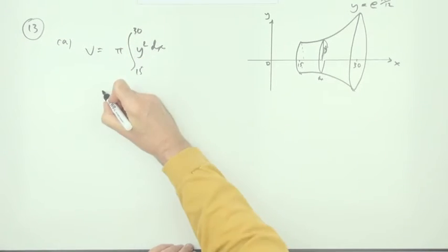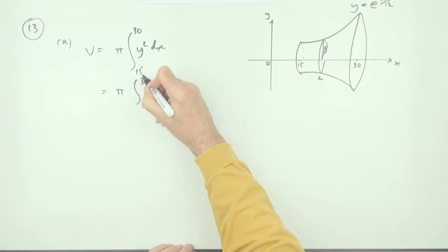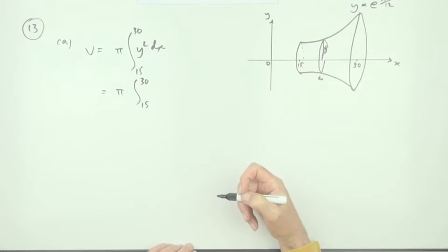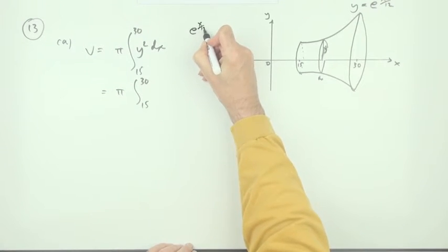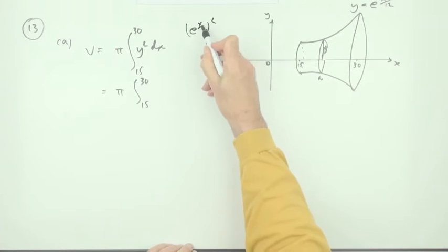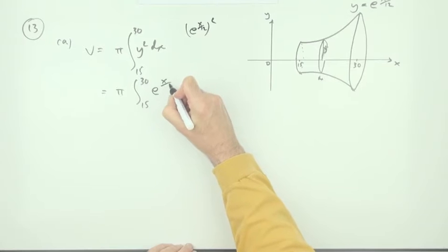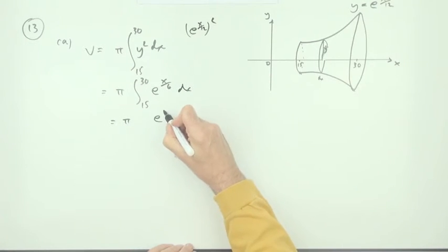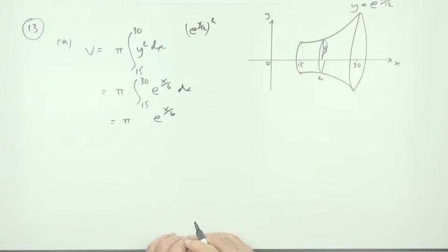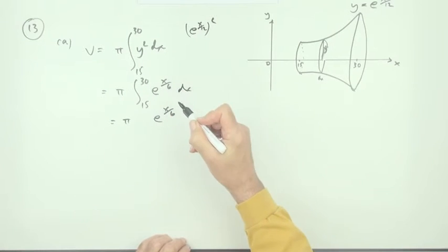So I'll put that outside from 15 to 30 since that's a constant. It'll be pi times y squared. If y is e to the x upon 12, then e to the x upon 12 squared means double it, that'll be x upon 6. So it's e to the x upon 6 dx. That just stays as e to the x upon 6 upon integration.